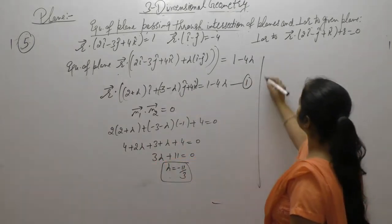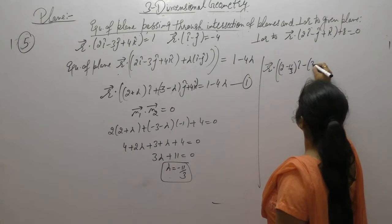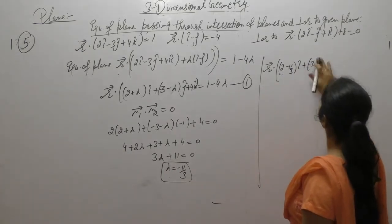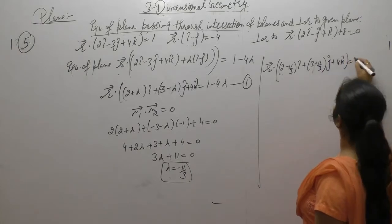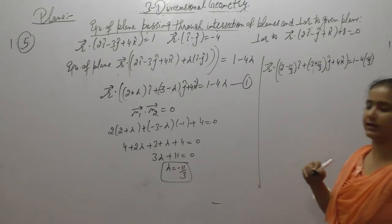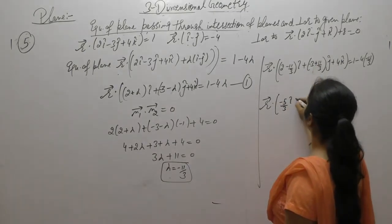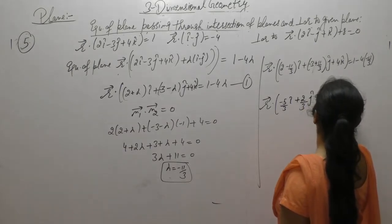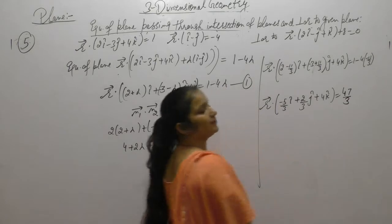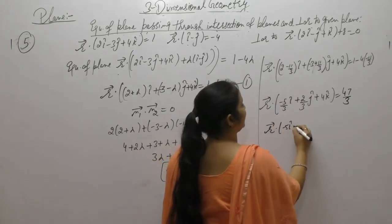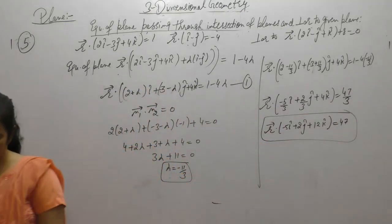Putting λ = −11/3 into the equation: r vector dot (2 − 11/3)î + (−3 + λ)ĵ + 4k̂. Computing: 3×2 = 6, 6 − 11 = −5/3 for the î component; −9 + 11 = 2/3 for the ĵ component; and 44 + 3 = 47/3 for the constant. Taking common factor, we get −5î + 2ĵ + 12k̂ = 47. This is the required equation of the plane.